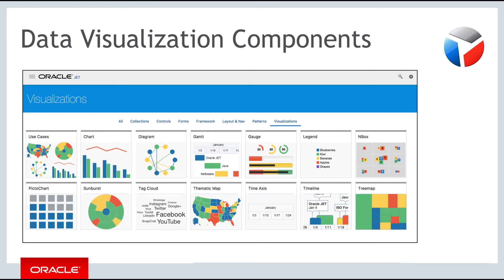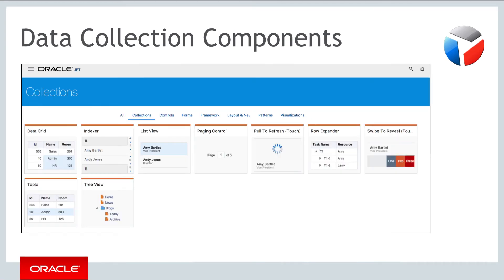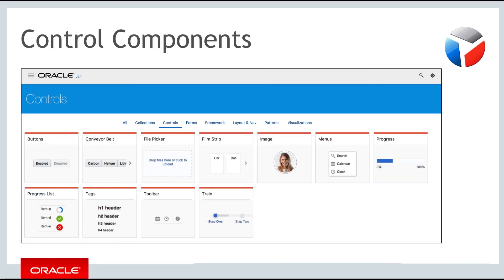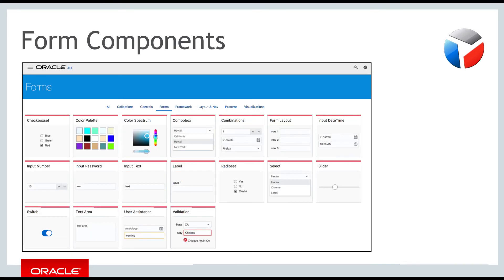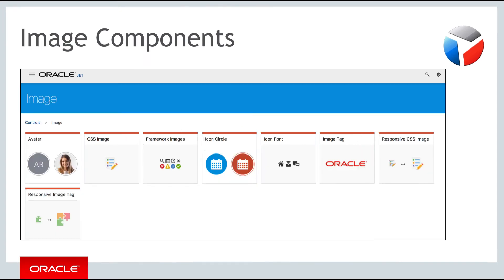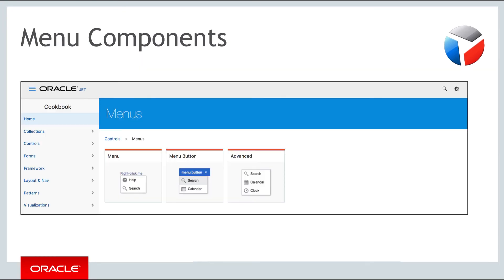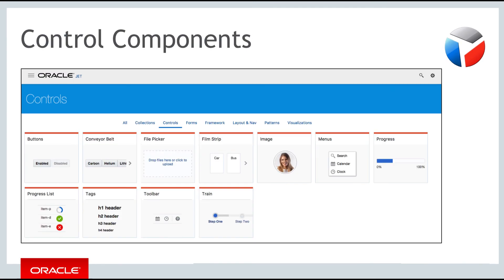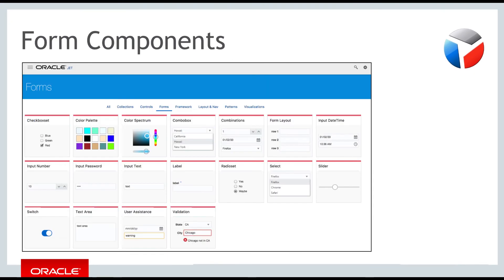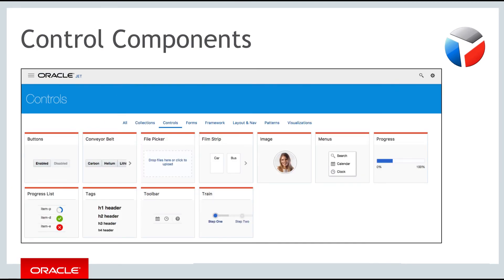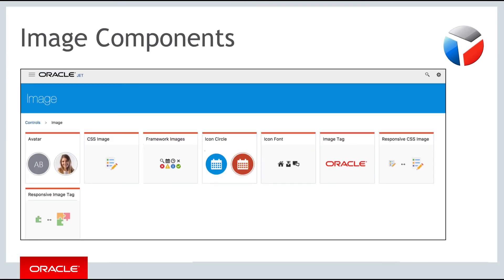We're going to be focusing on data visualization components and data collection components in the next parts of this course. Be aware that aside from those components there are several others: the form components, button components, image components, and menu components. These work as you might expect and have been included in Oracle JET so that all the user interface components in your JET application will have the same kind of behavior and appearance in terms of accessibility, internationalization and how they will look to the end user.